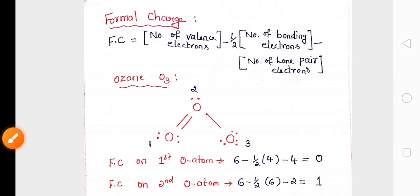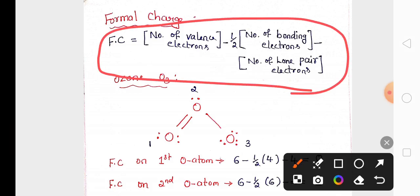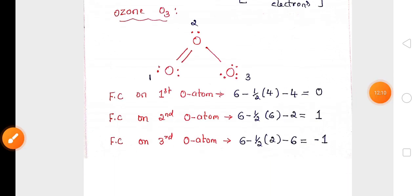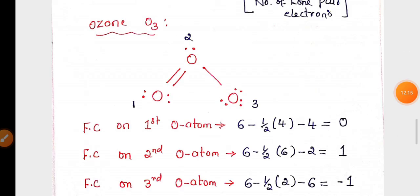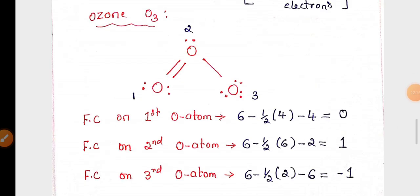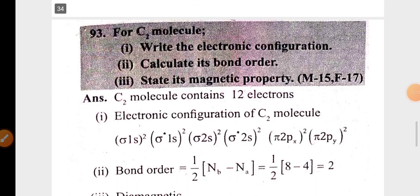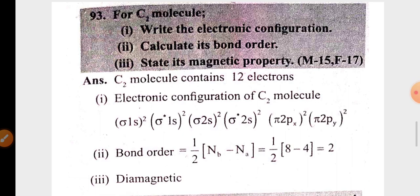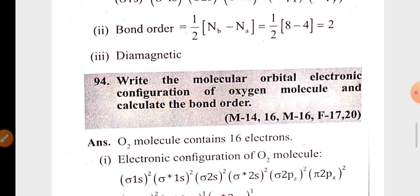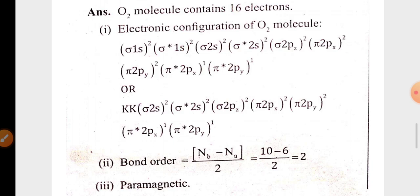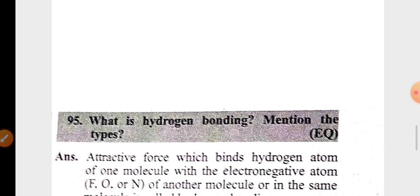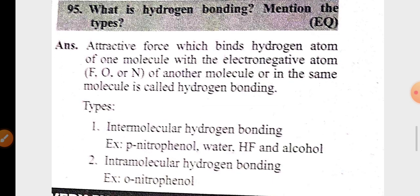Calculation of formal charge in ozone is also very important for the exam. Molecular orbital electronic configuration of the carbon molecule, its bond order, and magnetic property are going to be asked — either for carbon molecule or oxygen molecule. Another important question from this chapter is hydrogen bonding and its types.